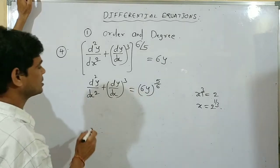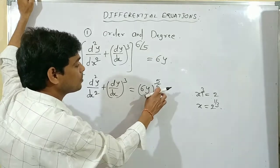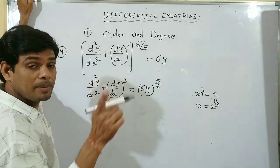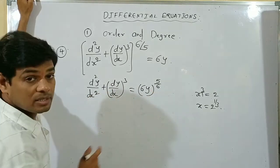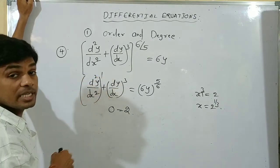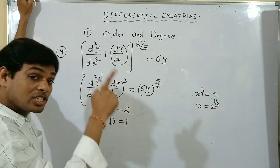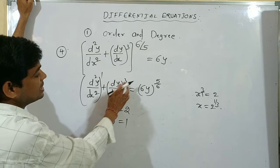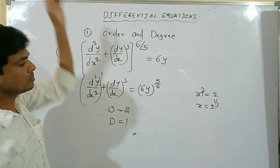Observe here — this is a polynomial differential equation. The highest order is d²y/dx², so order = 2. The power of the highest order term is 1, therefore degree = 1. Note: dy/dx is first order; dy/dx whole cubed is not the degree — the degree is the power of the highest order term, which is 1. Please make a note, everyone.